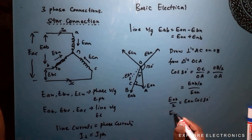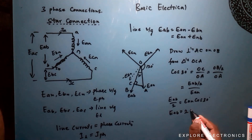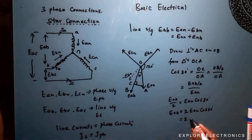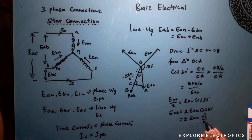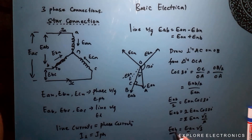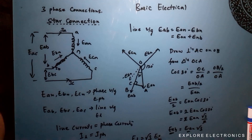Now we can write the expression for EAB: taking 2 to the right side gives EAB equals 2 times EAN times cos 30°. Since cos 30° equals √3/2, the 2s cancel, and EAB equals EAN times √3. Since EAB is the line voltage and EAN is the phase voltage, the relationship is: E_line equals √3 times E_phase. This is what we have derived for the star connection.